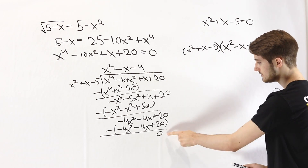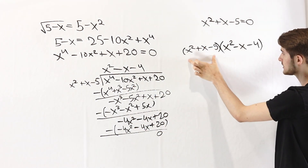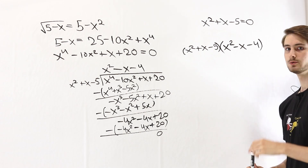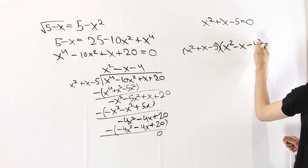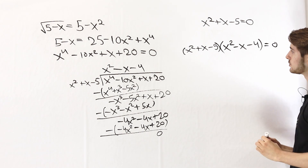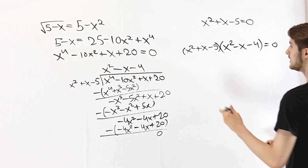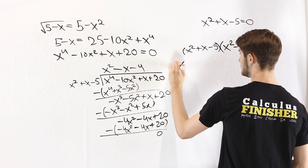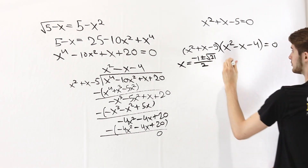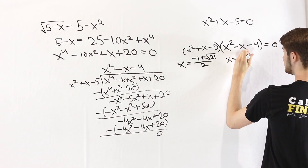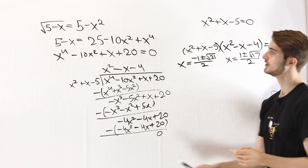From the polynomial long division with remainder zero, we can factor the quartic as x squared plus x minus 5 times x squared minus x minus 4. To find where this equals zero, we apply the quadratic formula to each factor. For x squared plus x minus 5, we get x equals negative 1 plus or minus the square root of 21 over 2. For x squared minus x minus 4, we get x equals 1 plus or minus the square root of 17 over 2. These are all possible solutions to the original equation.